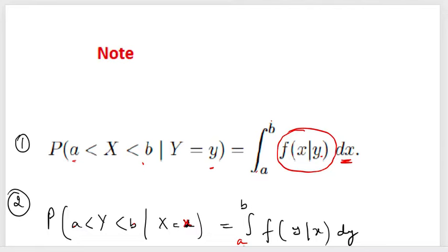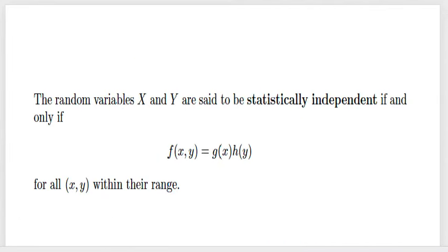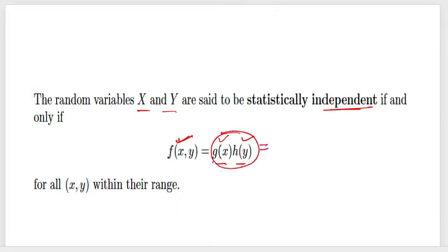Before switching over to problem solving, one more important point: two random variables can be said to be statistically independent if the joint probability density function can be written as the product of their marginal density functions. So to check independence, find g(x) and h(y), take their product, and if the product equals the original joint density function f(x, y), we declare them independent; otherwise not.